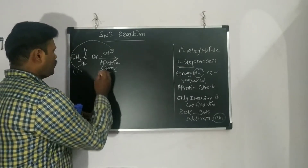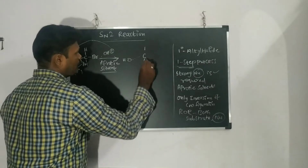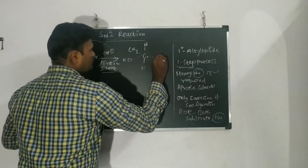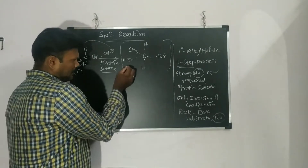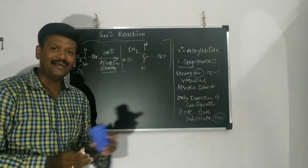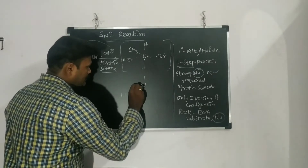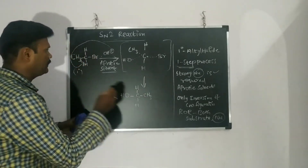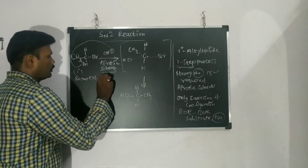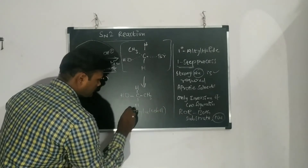Since there is no carbocation intermediate, we observe a transition state where OH⁻ attaches to the carbon while Br⁻ leaves simultaneously. The OH becomes attached to the carbon, with H and CH₃ also attached, and Br is shown leaving. The attachment of OH⁻ and the departure of Br⁻ occur simultaneously — that is the single-step process. The product obtained is CH₃CH₂OH. The starting material is bromoethane (two carbons with Br), and the product is ethyl alcohol, also called ethanol.